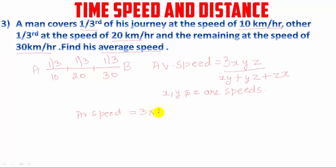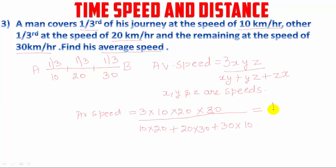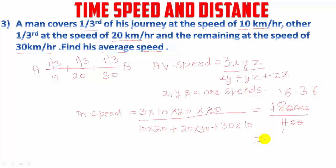Average speed = 3 × 10 × 20 × 30 divided by (10 × 20) + (20 × 30) + (30 × 10). The numerator gives 18,000 and the denominator gives 200 + 600 + 300 = 1,100. Dividing 18,000 by 1,100 gives us approximately 16.36 km per hour. That is our answer.